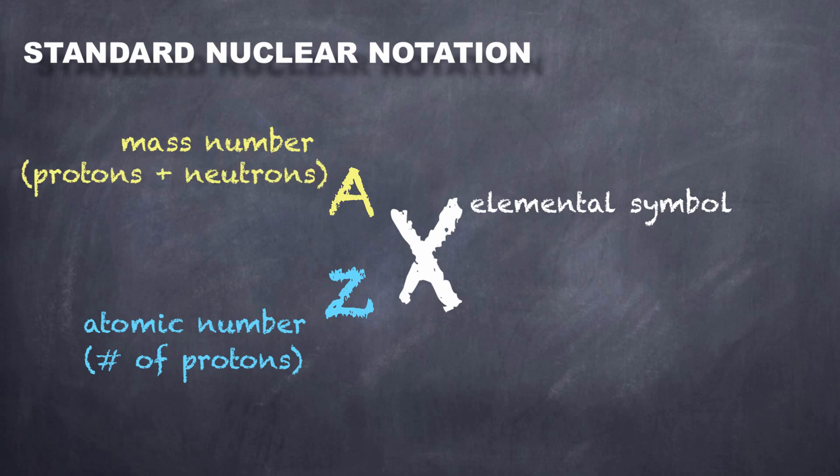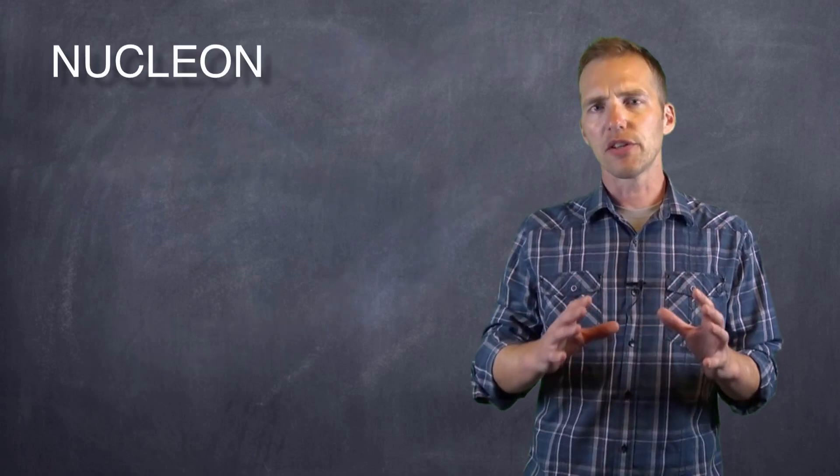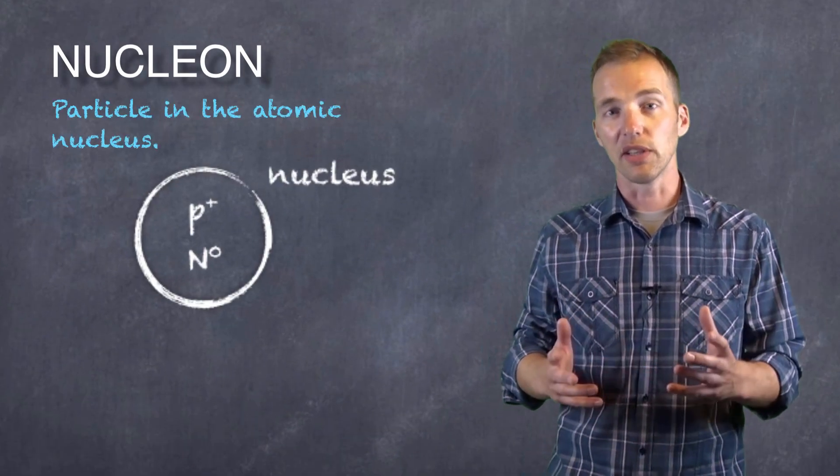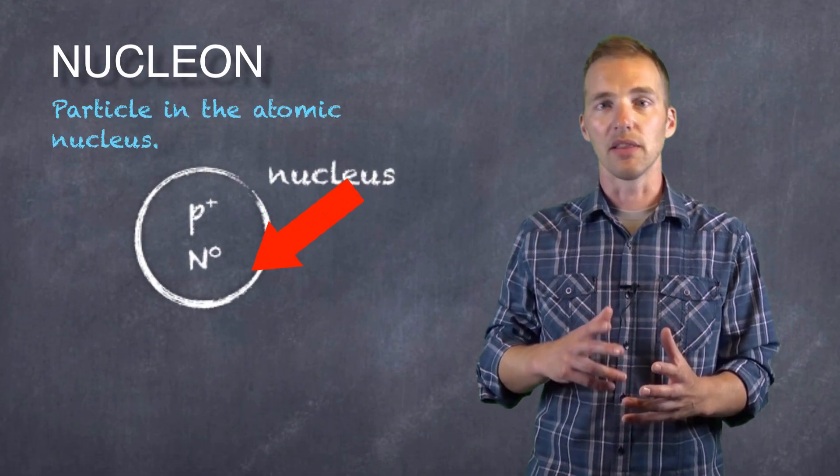The mass number, as we can see, doesn't represent one subatomic particle. It represents the total of two, or the total of all of the nucleons within that particular atom. Now if you've never heard the term nucleon before, it really just refers to those subatomic particles that are in the nucleus, the protons and the neutrons.